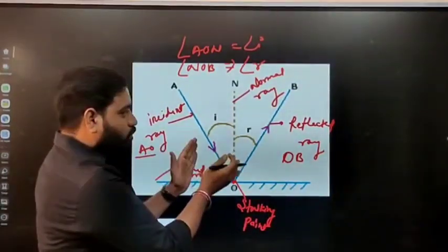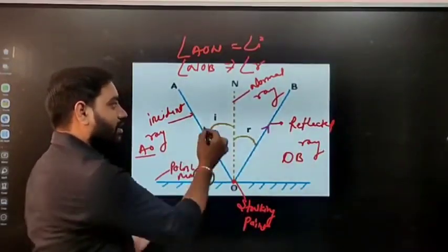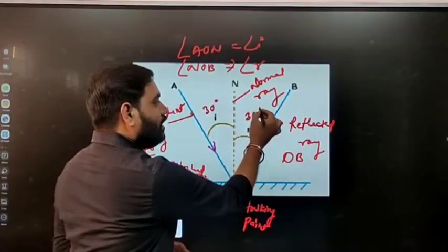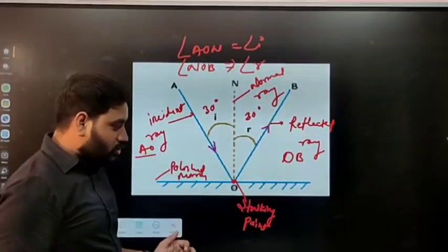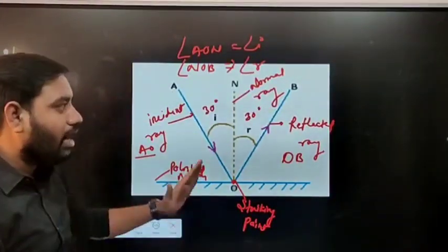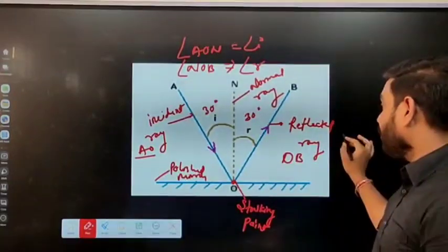So both these angles are equal. If the incidence angle will be 30 degrees, then the reflected angle also will be 30 degrees. So from this you can learn how the rays are coming down and how it is reflecting. Next, what are the rules of reflection?